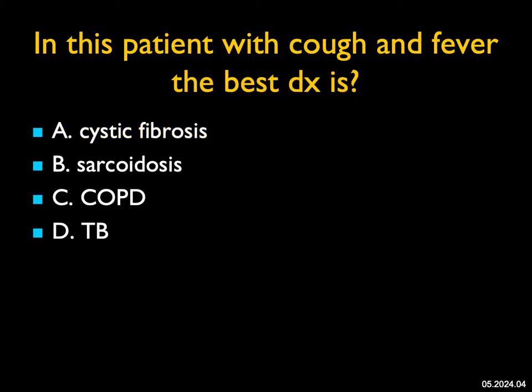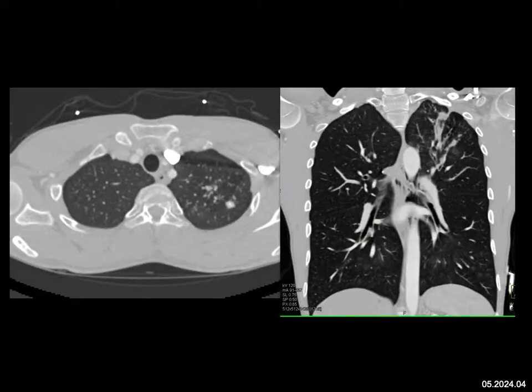In this patient with cough and fever: when you look at this case, you see a nodular pattern in the left upper lung — really just the left upper lung. So it's not cystic fibrosis, which involves the entire lung with dilated bronchi. Sarcoidosis can involve only a portion of the lung and has many different appearances, but I don't see adenopathy here.